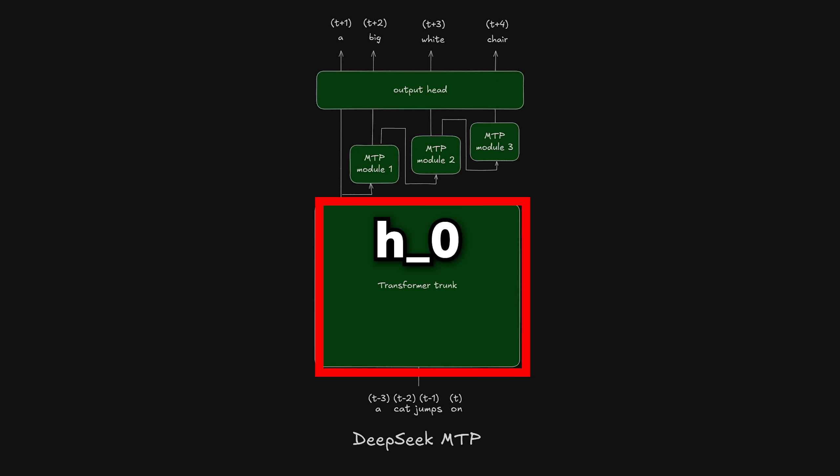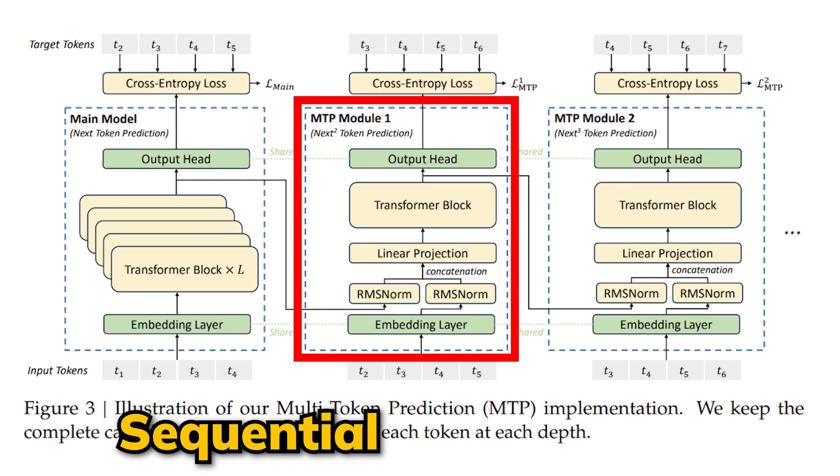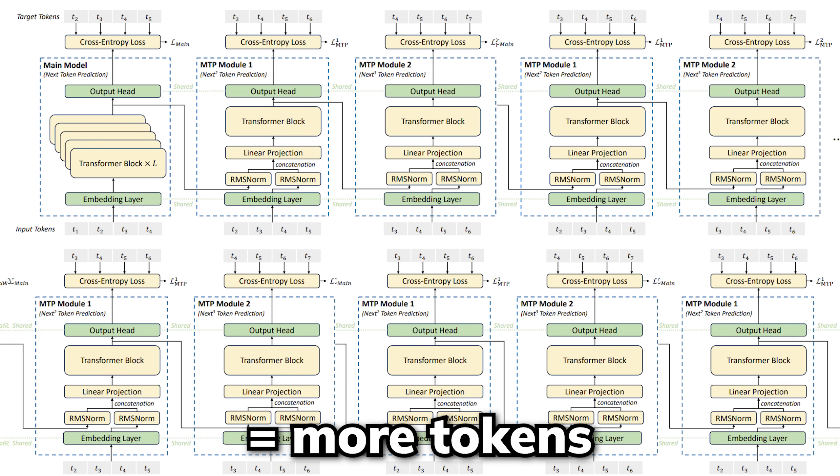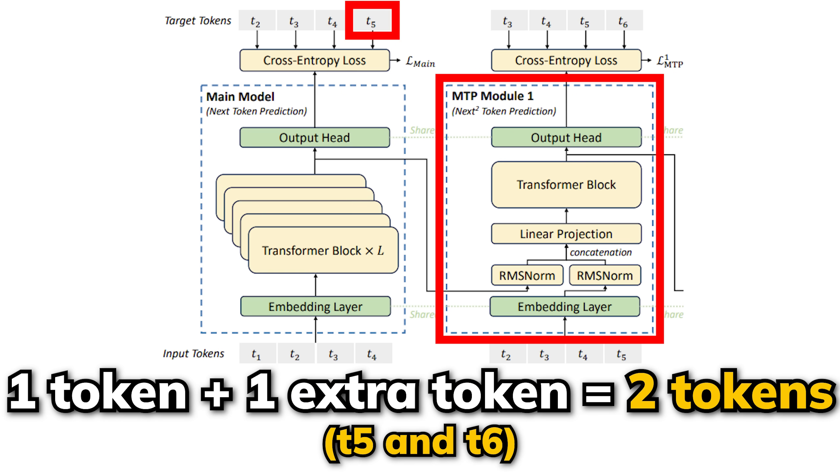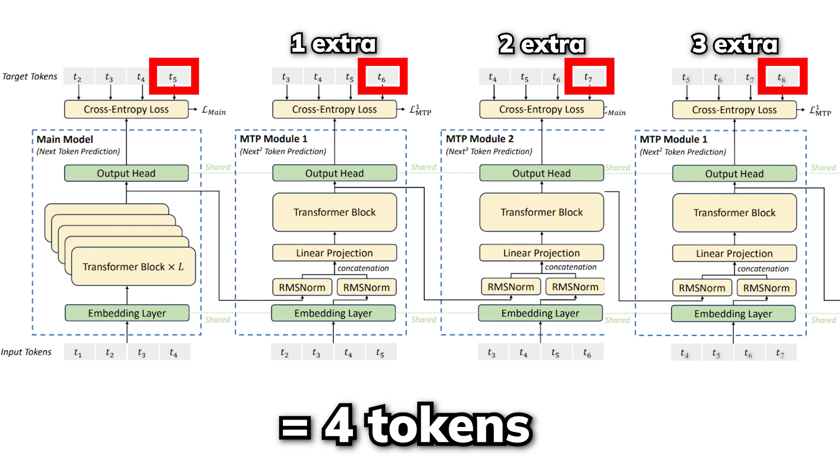They added this thing called sequential MTP modules, and the more modules here means the more tokens it'll predict. In this case, having one MTP module means predicting one extra token, so two tokens at once, and having three MTP modules means predicting four tokens at once. So unlike the standard MTP, which hysterically predicts all the tokens simultaneously with their hidden state H0, every MTP module used for DeepSeek V3 also takes in the information of the last token during training.